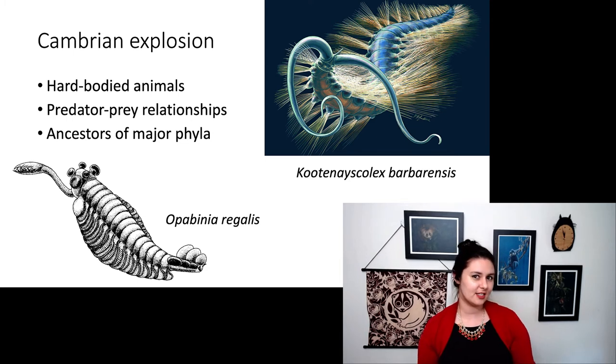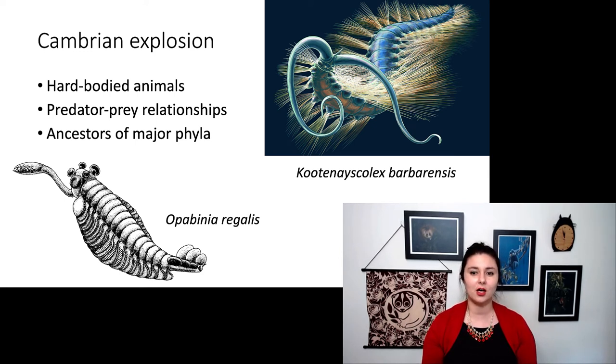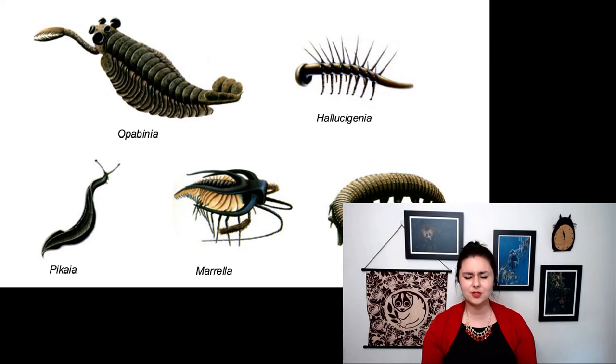And what we do find is the ancestors of the major phyla at this point in time are present. So these are our cnidarians, our ctenophorans, our chordates, and all of the other major groups we've talked about. Here are some examples. We have opabinia with its little weird thing at its mouth. And then we have Kootenascolix barbarensis, which kind of looks like a hallucinating caterpillar here. One of the things about the Cambrian explosion is the animals that we find are just so bizarre and amazing. Like one we literally named Hallucigenia. That's how weird it looked. You can see some others here as well as Pikaia, Marrella, and Aysheaia. So we have a lot of different worm things and a lot of different spikes going on.